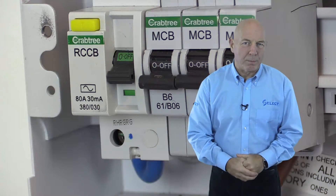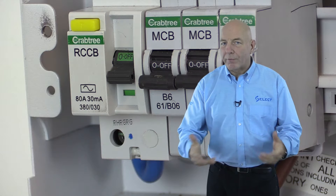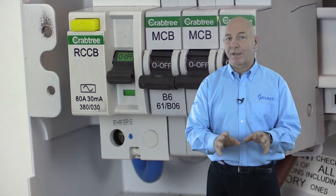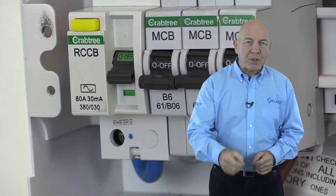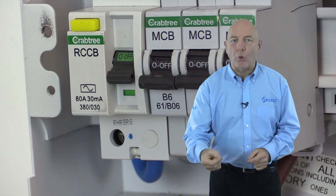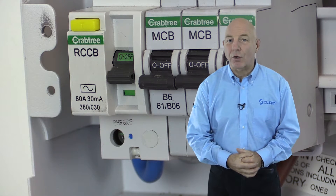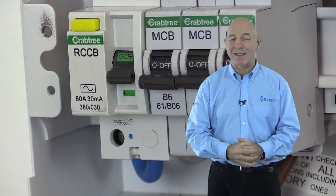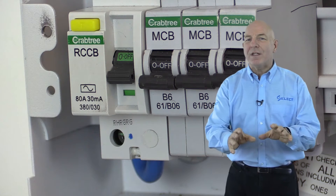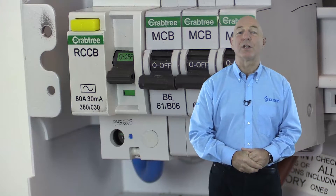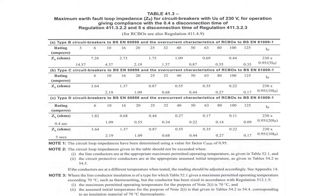Maximum earth fault loop impedance values: fuses and circuit breakers, overcurrent protective devices, have different operating characteristics depending on the product standard and type. To ensure sufficient fault current is produced during a fault to cause operation, it's important that the earth fault loop impedance does not exceed the maximum impedance value necessary to achieve this. These maximum earth fault loop impedance ZS values are provided in Chapter 41 of BS 7671 in Tables 41.2, 41.3, and 41.4. This is Table 41.3.